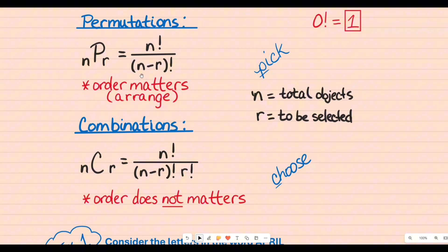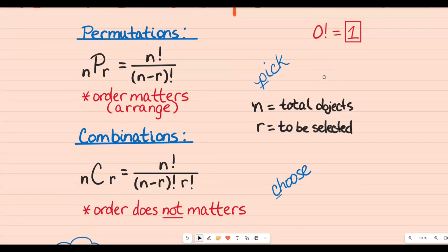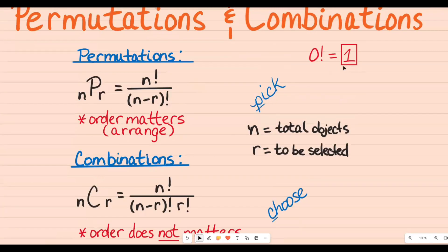In the denominator, you take n and subtract r from it, then do the factorial of that result. So if n is five and r is three, you get five minus three which is two, and two factorial is two times one. If you ever have zero factorial, that does not mean zero — it means one. You just have to know this rule.